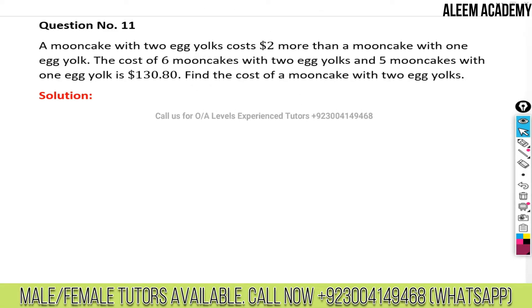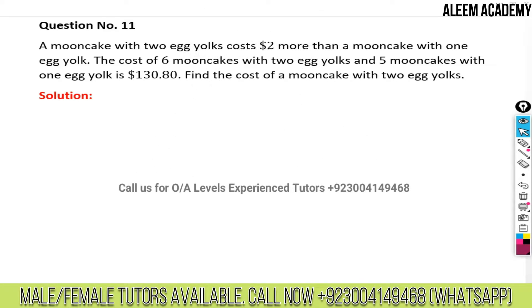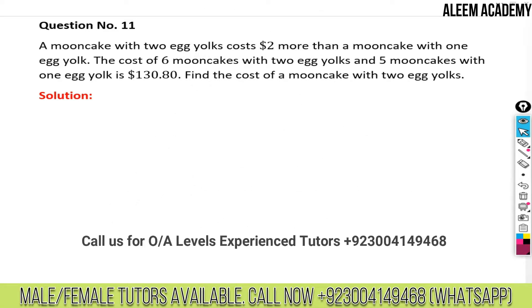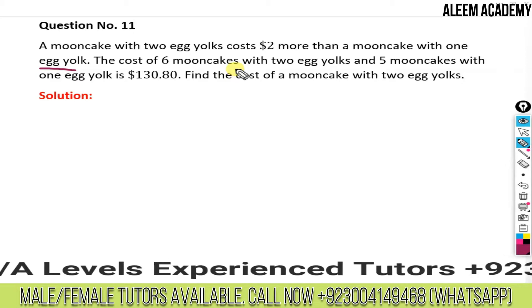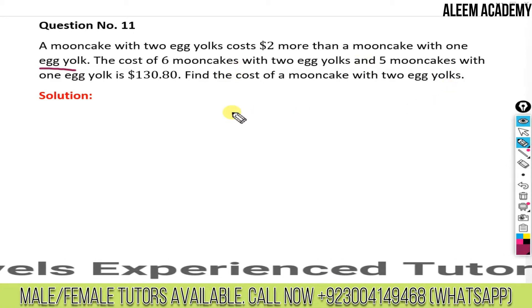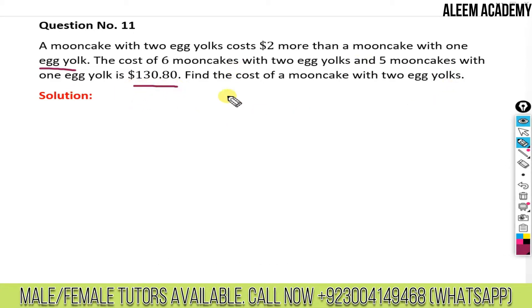Hello and welcome to Aleem Academy. The question is: a mooncake with two egg yolks costs two dollars more than a mooncake with one egg yolk. The cost of six mooncakes with two egg yolks and five mooncakes with one egg yolk is $130.80. Find the cost of a mooncake with two egg yolks.